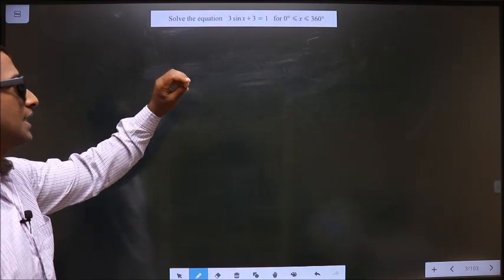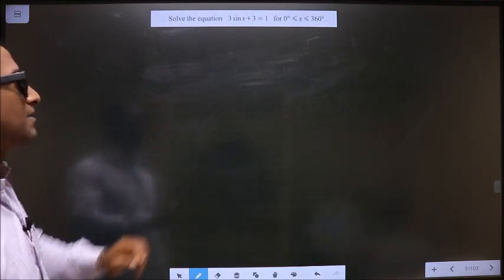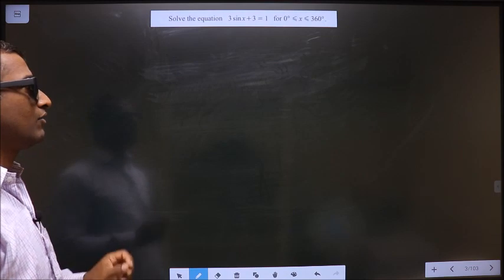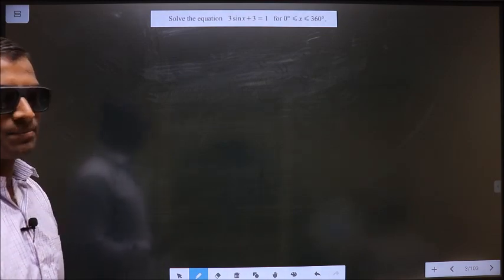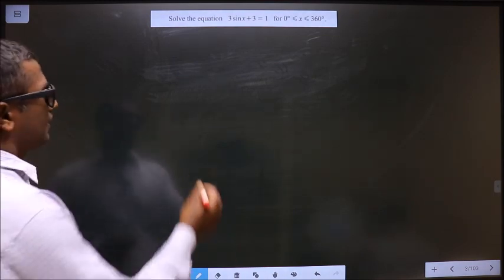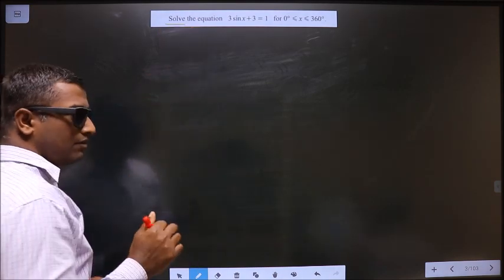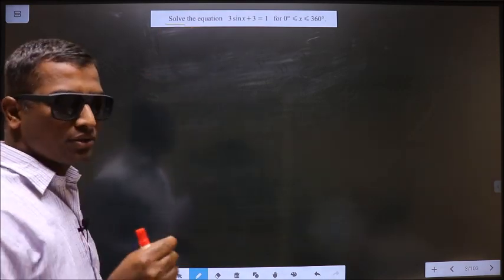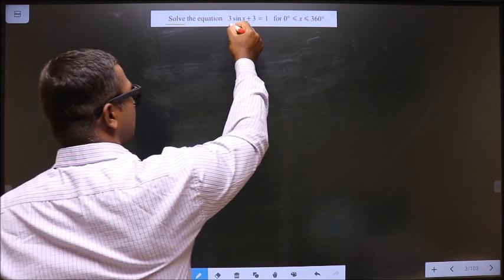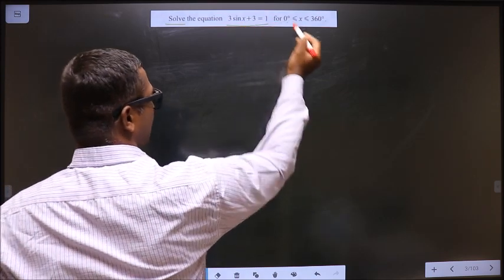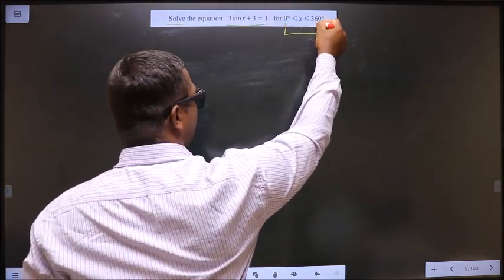Solve the equation: 3 sin x plus 3 equals 1, for x lies between 0 to 360. You need to find the values for x satisfying this equation and present in this interval.